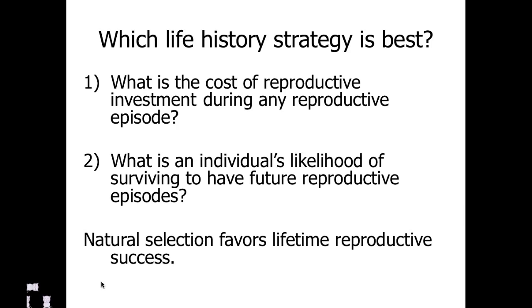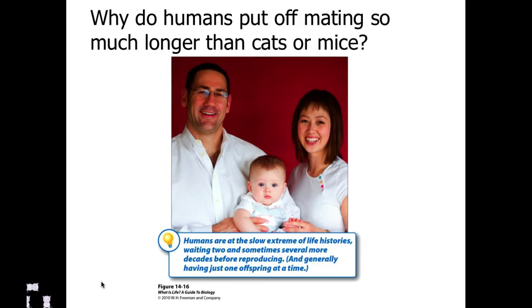Which of these strategies is best? Again, it's impossible to say because there is no ideal — it depends on how the organism lives and how long it can expect to live. Why do humans put off mating for so long? Even though we are reproductively viable between ages 12 and 14, we don't tend to reproduce as soon as we are biologically able to, whereas cats, mice, and many four-legged mammals reproduce almost immediately. Think about that — hopefully you already see the answer from what we talked about before. This was part two of population ecology.